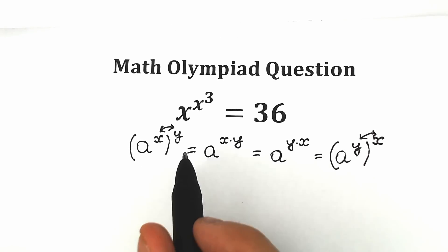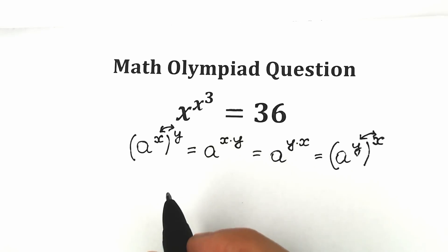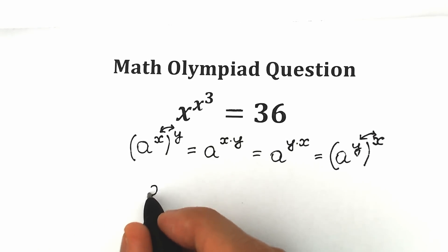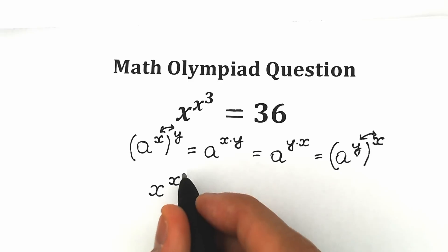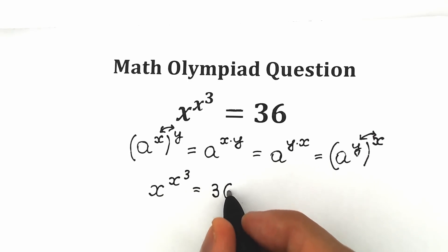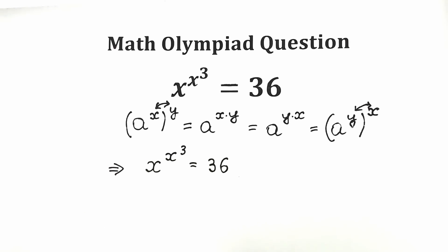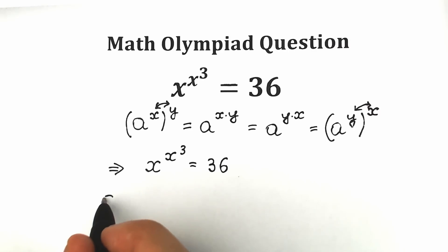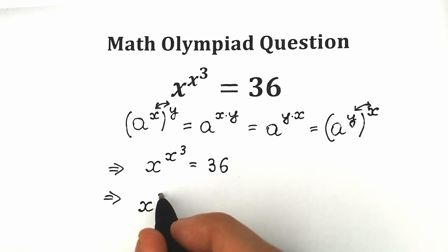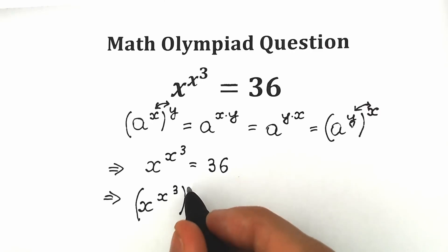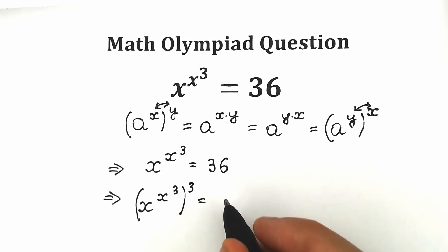Now let's use this tricky move on our question. Let's rewrite our question: x to the power x to the power 3 equals 36. Now let's raise both sides to the power 3. On the left side we have x to the power x to the power 3, raised to the power 3, which is equal to 36 to the power 3.